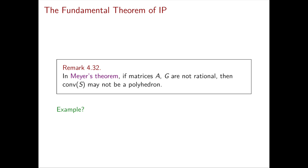Think about the possibilities and try to understand how conv(S) might look if you drop the rationality assumption. There are at least two behaviors you can find in dimension two. In one case, conv(S) will be almost like a polyhedron, but missing some boundary points — the closure is polyhedral while conv(S) is not. Another type of example: conv(S) is a closed set, but it's defined by an infinite system of linear inequalities — still only linear inequalities, but infinitely many.